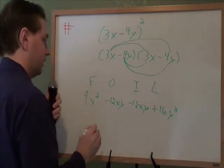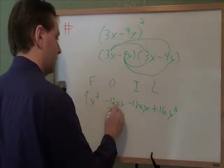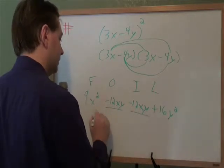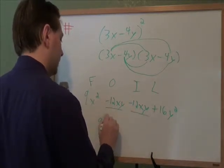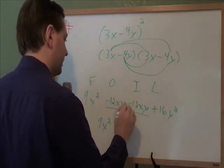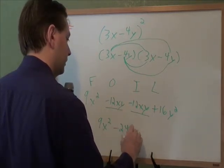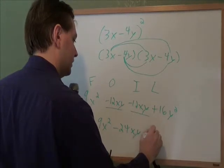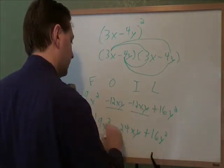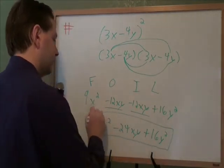And once we've FOILed it out, we want to combine like terms. Our only like terms are these xy's in the middle. So that gives us 9x² minus 12 and minus 12 combines to give you minus 24xy and that's still a plus 16y² there. And that is that answer.